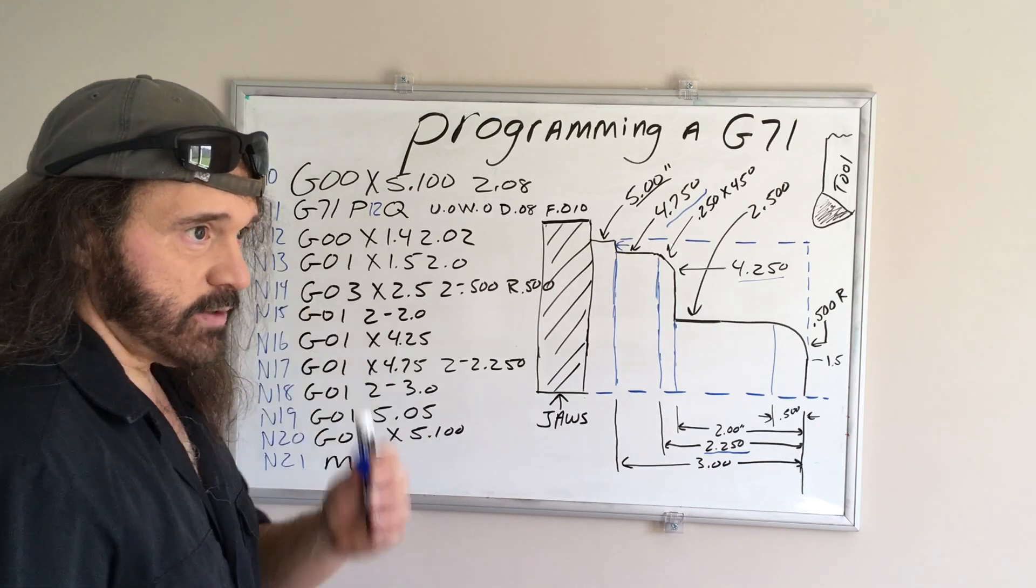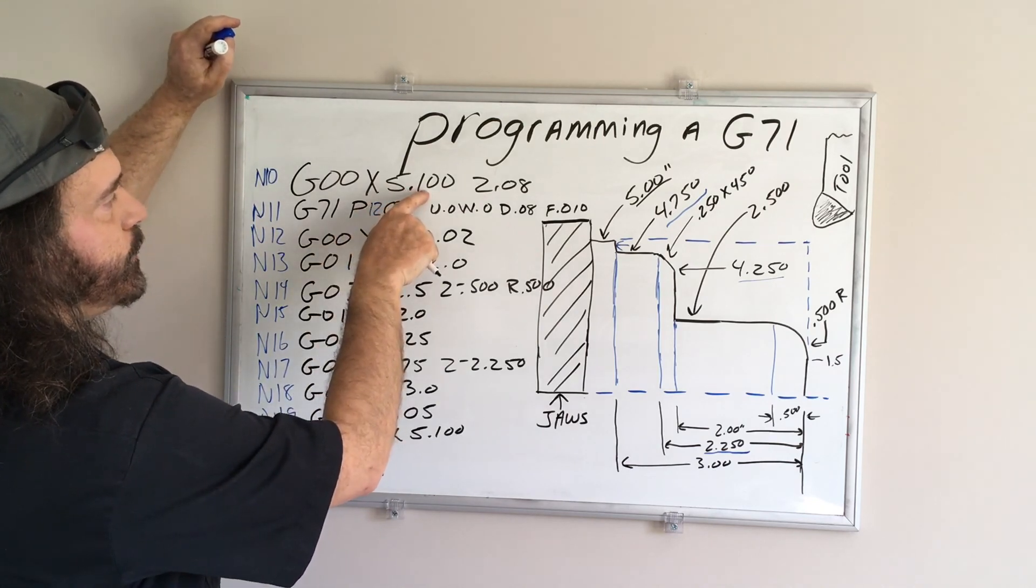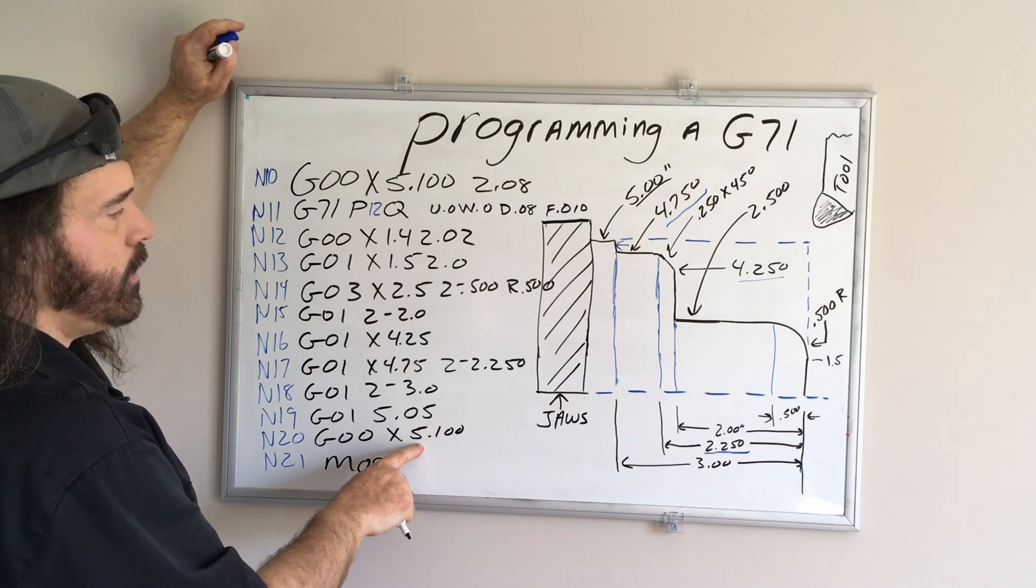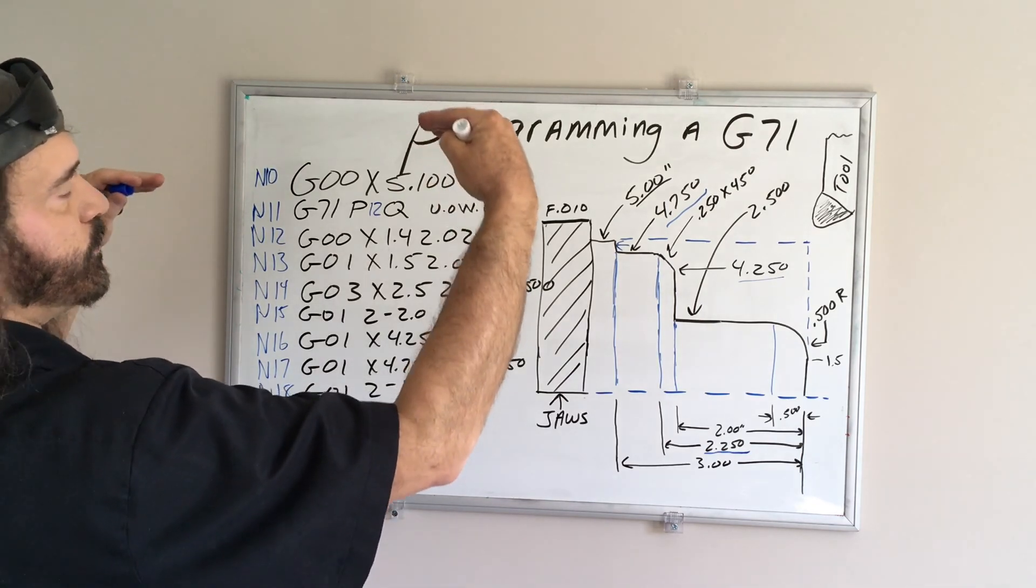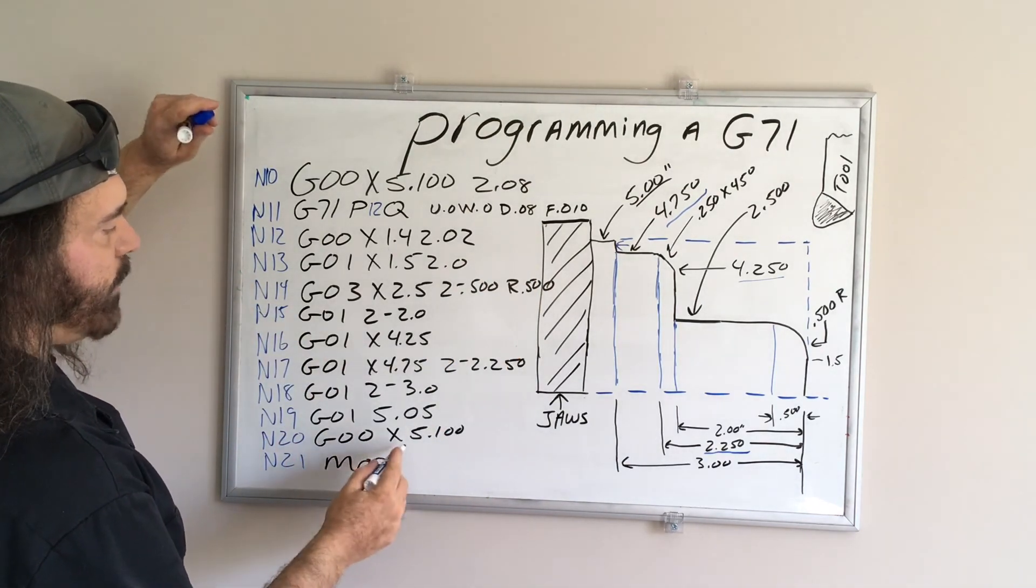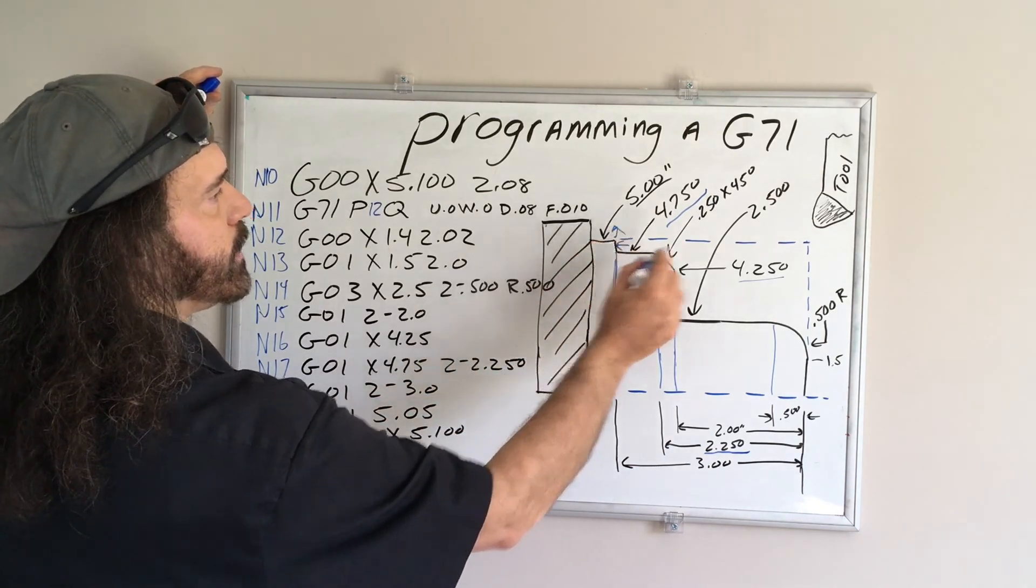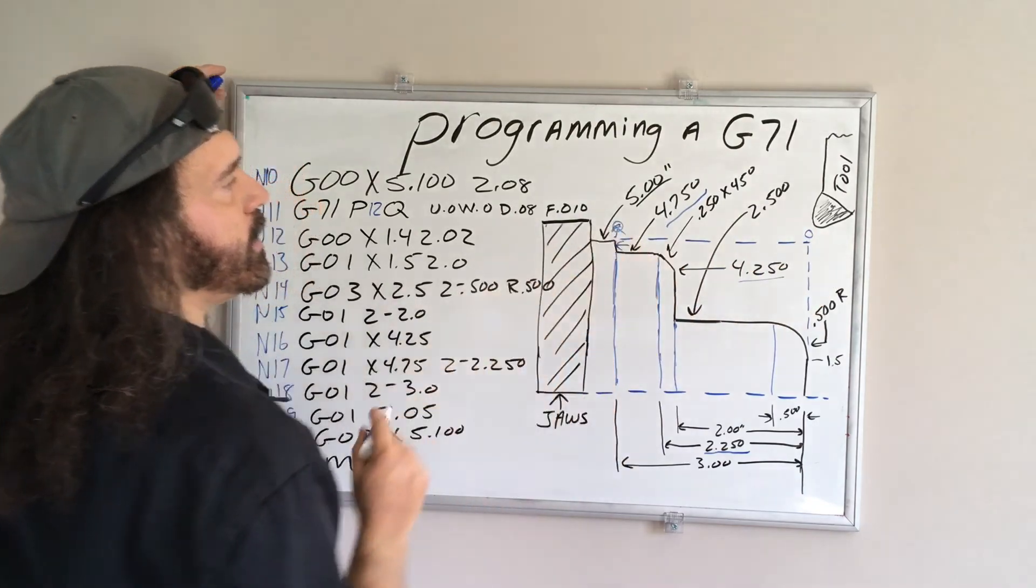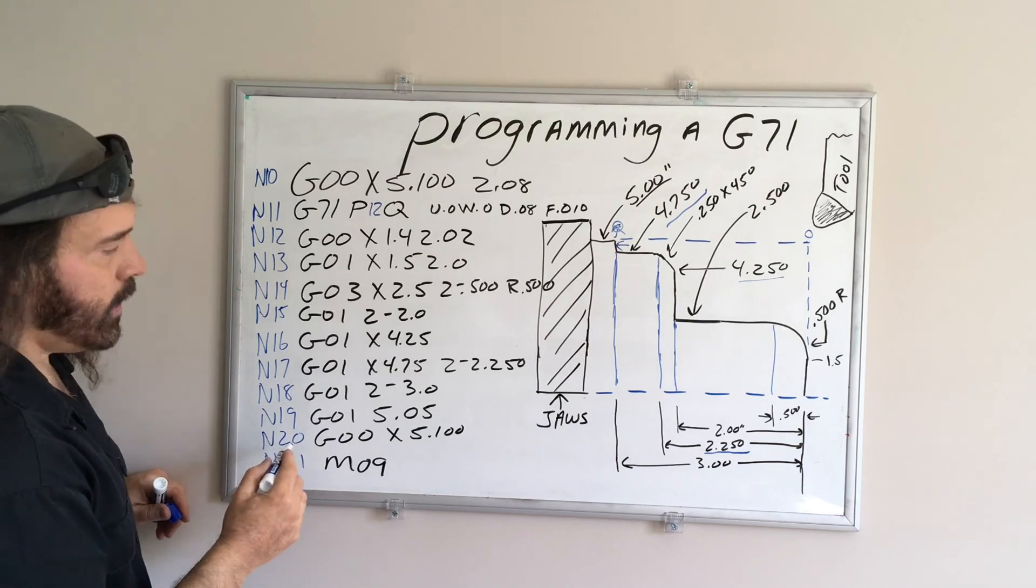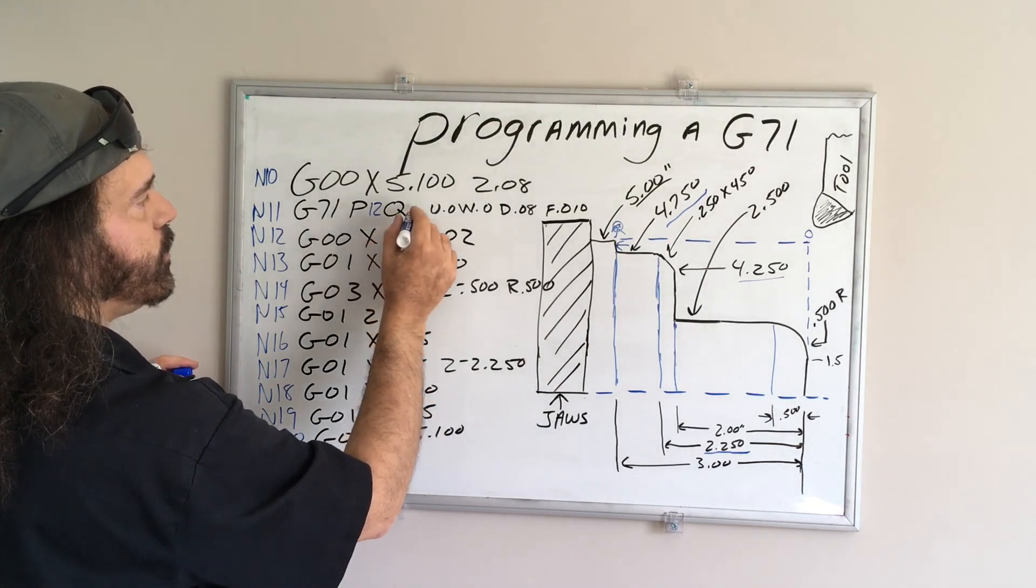And with canned cycles, wherever you start it at, you want to end at the same number. You can't have it at two different planes, because it just won't take. So I'm going to rapid up to x5.1. So now we're going to come back up, and say we started here, this is where we're going to end. So that is line number 20. That's all you have to do. So now that Q becomes 20.